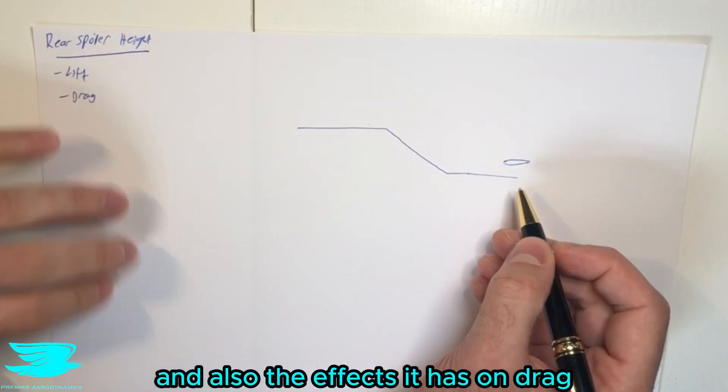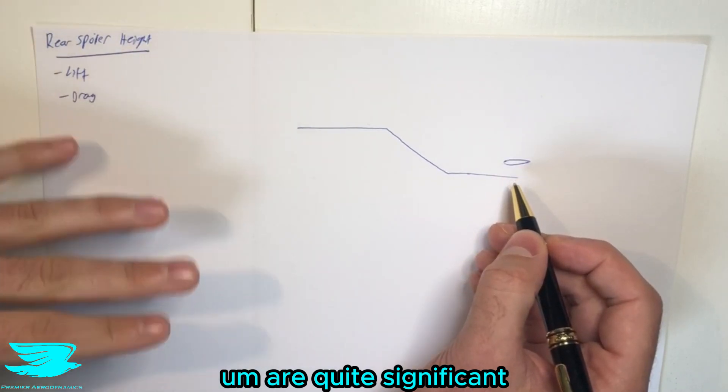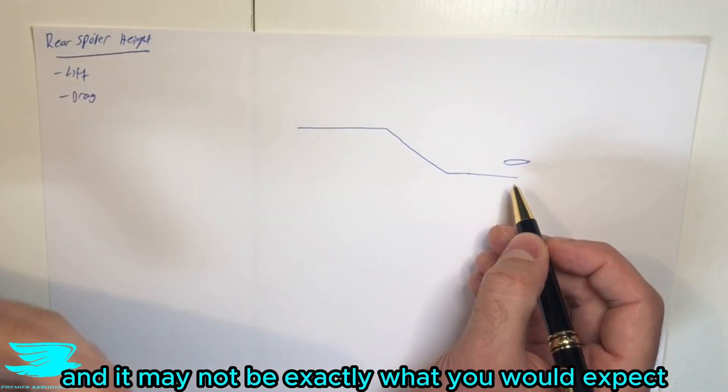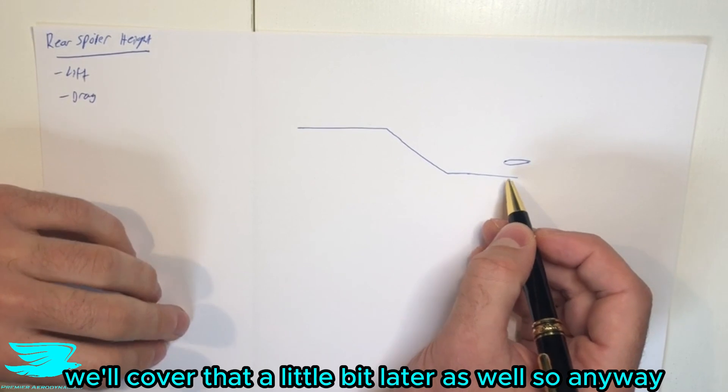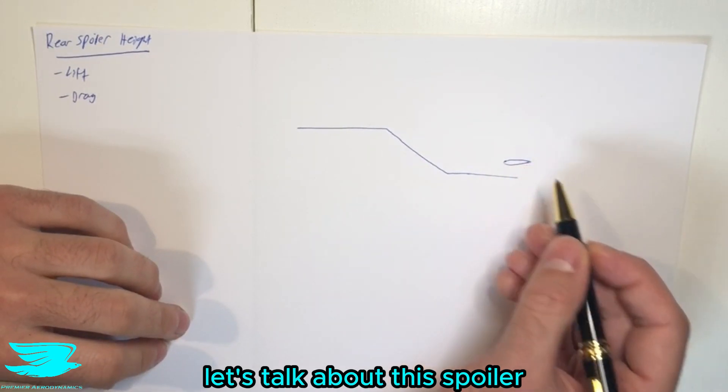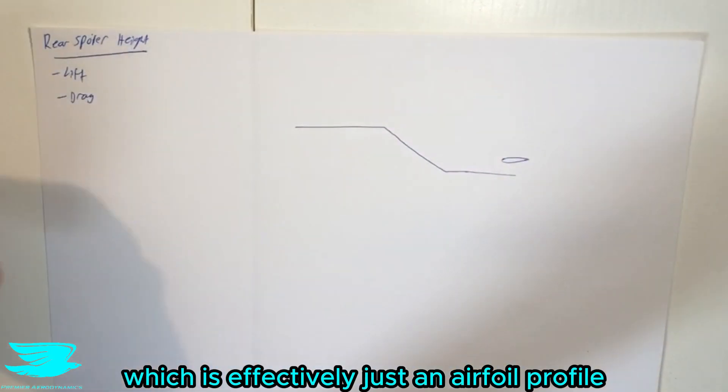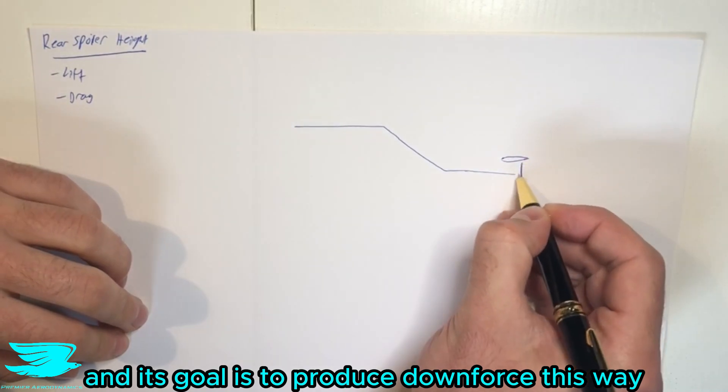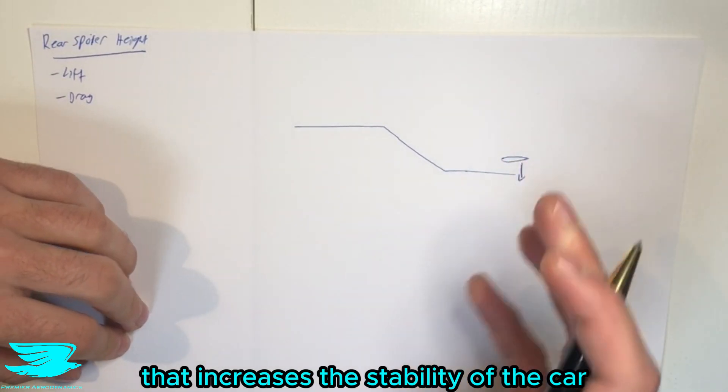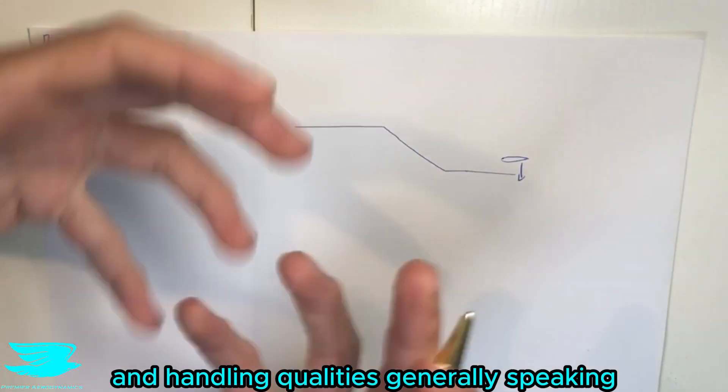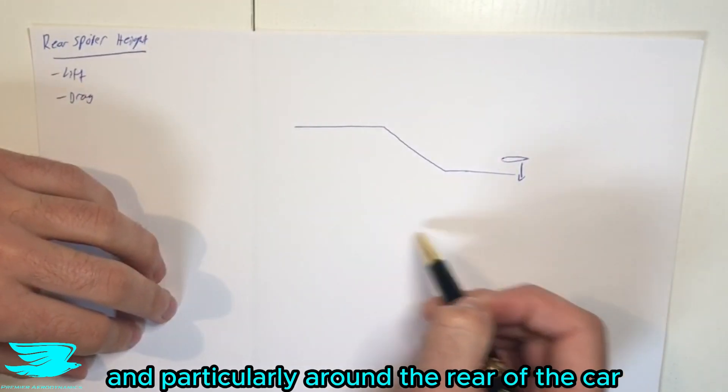And also the effects it has on drag are quite significant and it may not be exactly what you would expect. We'll cover that a little bit later as well. So anyway, let's talk about this spoiler which is effectively just an airfoil profile. And its goal is to produce downforce this way that increases the stability of the car and handling qualities, generally speaking, and particularly around the rear of the car.